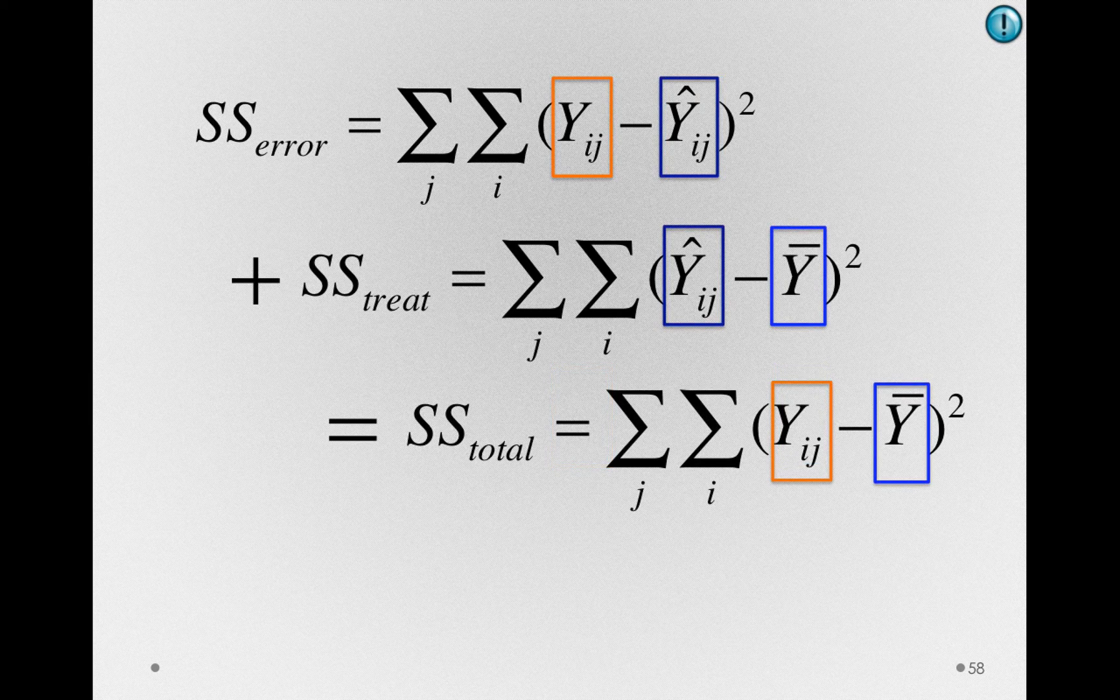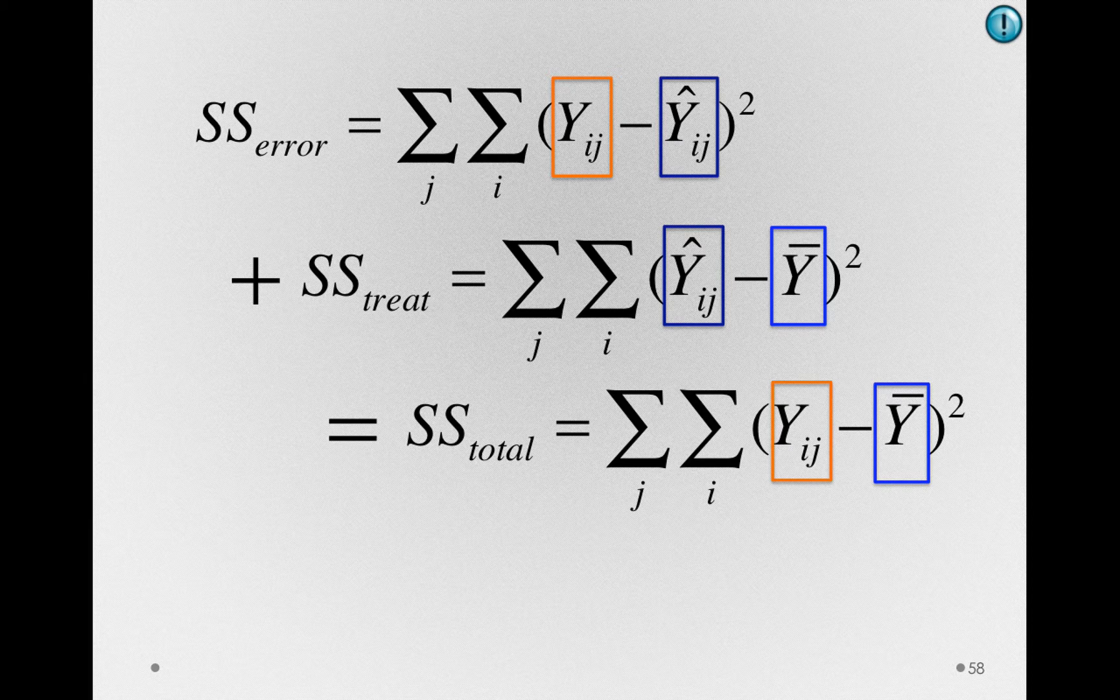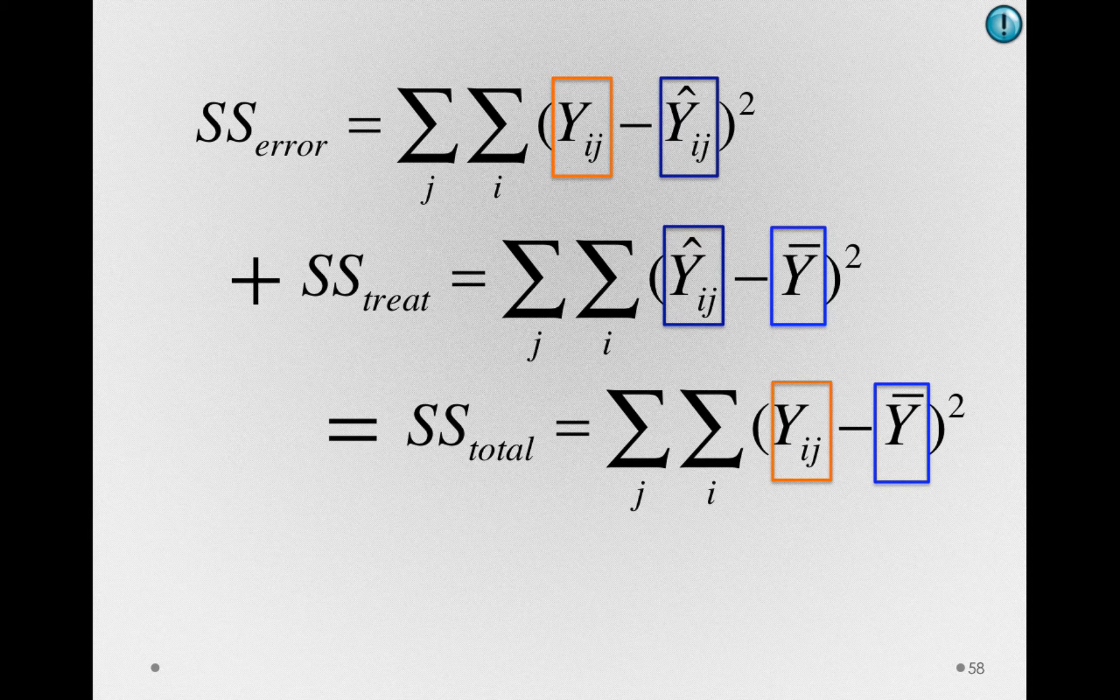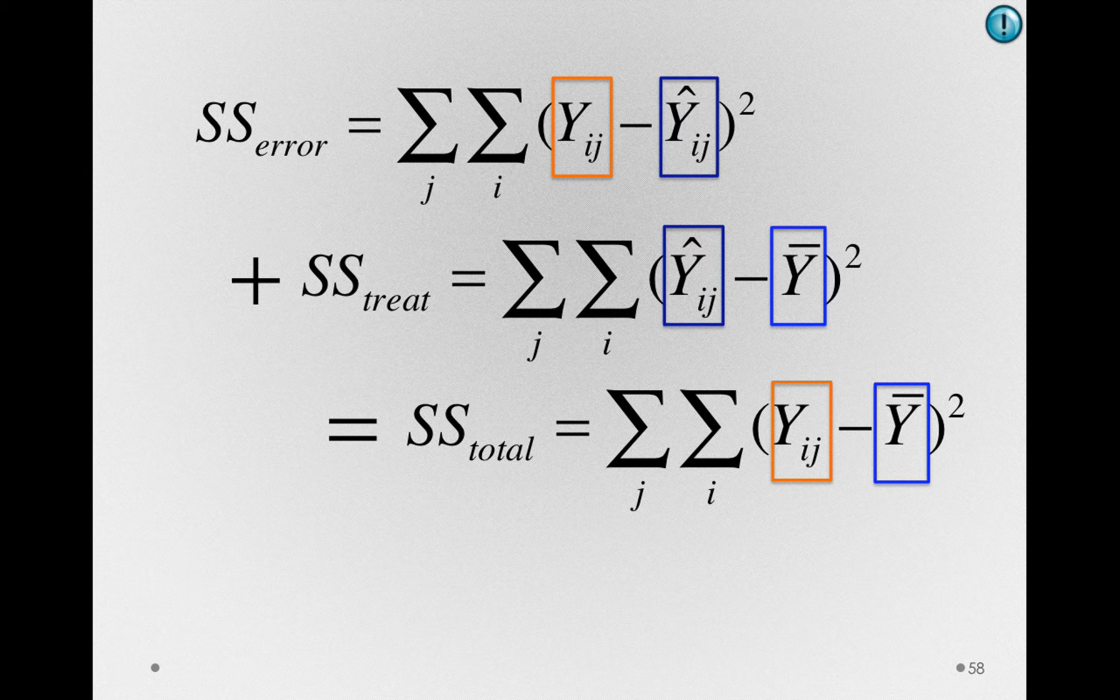Let me push together sums of squares total so it's not spread out, but let's just remember that the sums of squares total is being partitioned into these two components.